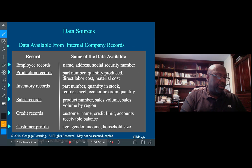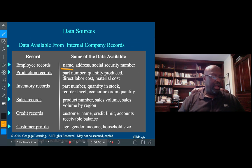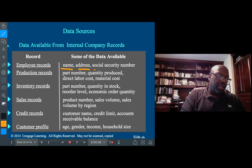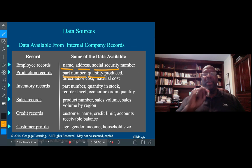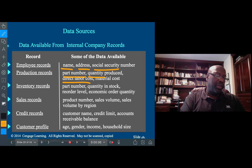If we look at different types of records from an internal database from a company, we could see some of the things we could identify. Names, that would be an example of nominal data because no person is better than the other per se. Address, nominal data. Social security number, it's numeric but also nominal. In terms of production records, a part number is also just a category. Quantity would be ratio data because if you have six and twelve, then twelve is twice the value of six. Direct labor costs would also be ratio data, material costs would be ratio data.